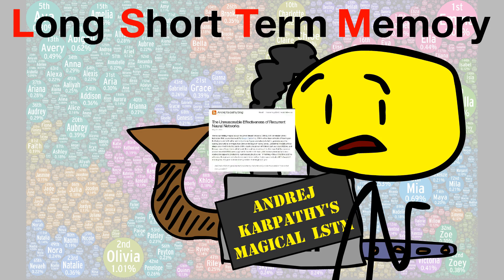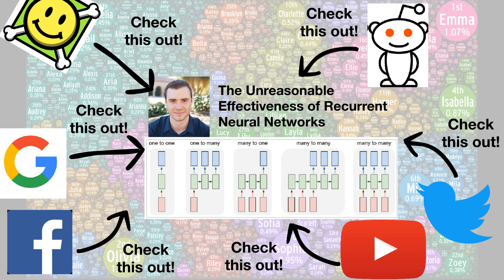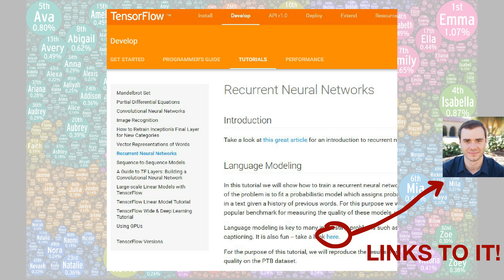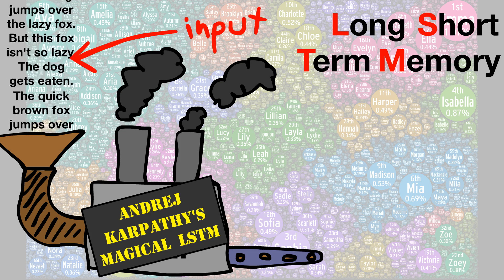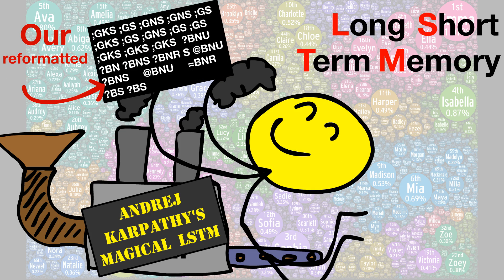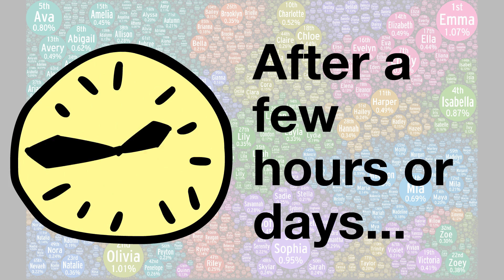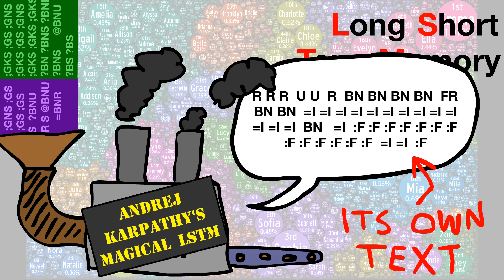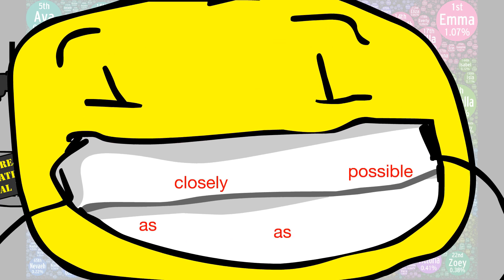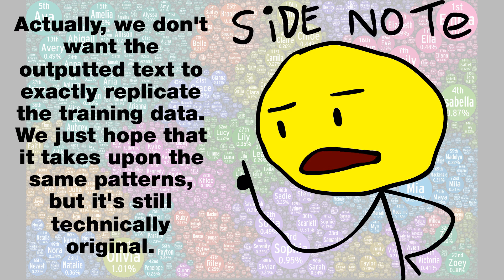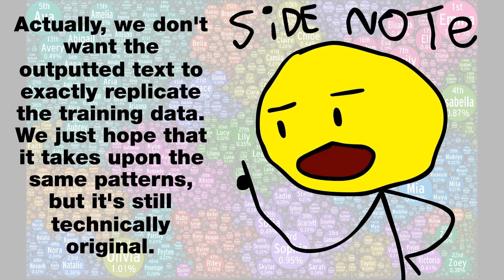The next step is Andrej Karpathy's Magical LSTM. His blog post of this LSTM learning and replicating complex patterns of text is pretty much famous now. It seems like every machine learning article links to it somewhere, even Google. Since this LSTM takes in text as input, we can just feed our reformatted Bach text and it'll start training. After a few hours or days, we can stop the training and have the LSTM output its own text. Hopefully this text imitates our original training data as closely as possible. We don't want the outputted text to exactly replicate the training data — we just hope that it takes on the same patterns but is still technically original.